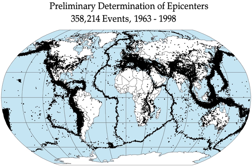An 8.6 magnitude earthquake releases the same amount of energy as 10,000 atomic bombs like those used in World War II. The energy released in an earthquake, and thus its magnitude, is proportional to the area of the fault that ruptures and the stress drop. Therefore, the longer the length and the wider the width of the faulted area, the larger the resulting magnitude.